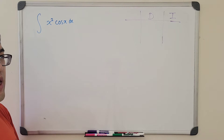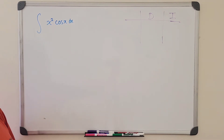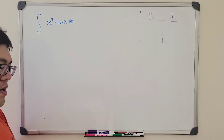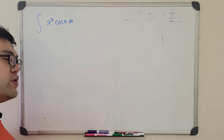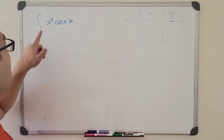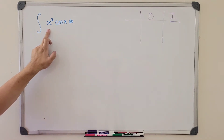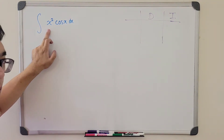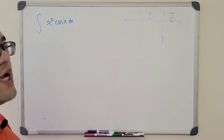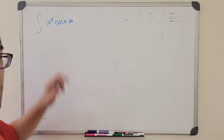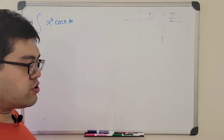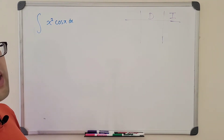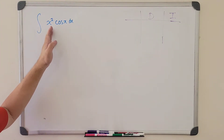If we take the derivative of cosine of x, we get negative sine of x; take the derivative again, negative cosine of x; again, sine of x; again, cosine of x. So if we take the derivative of the cosine part, it will never end — we always get a loop back. However, if we take the derivative of x squared, we get 2x, then 2, then 0. Each time we take a step, we reduce the expression to a lower degree until it reaches zero. This is exactly what we want.